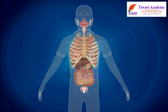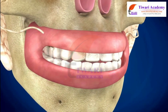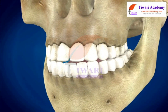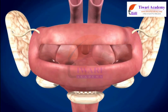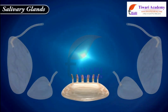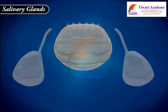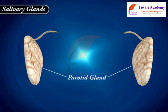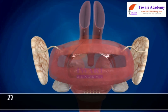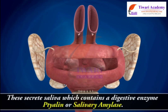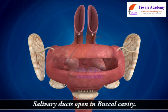The human digestive system starts with the mouth and buccal cavity. Buccal cavity has tongue, teeth and salivary glands in it. There are three pairs of salivary glands in humans: the sublingual gland, the submaxillary gland and the parotid gland. These secrete saliva, which contains a digestive enzyme called ptyalin or salivary amylase. Salivary ducts open in the buccal cavity.